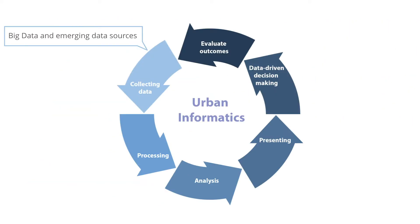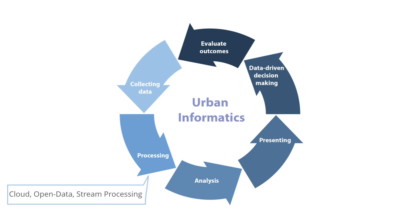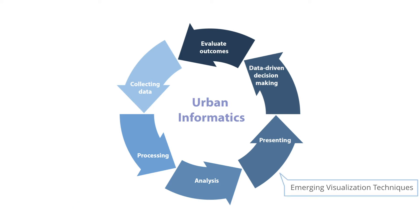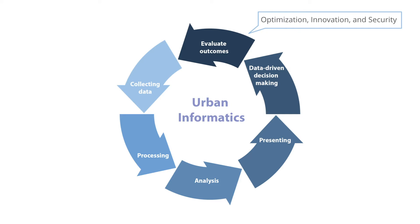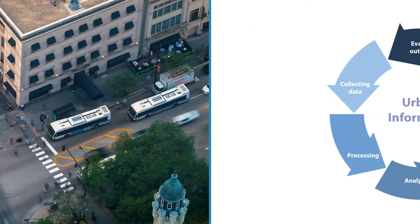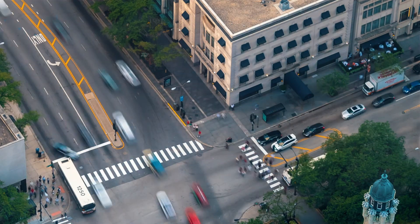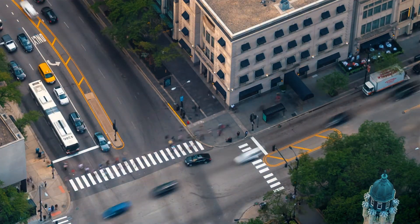This course is organized around the steps of urban informatics. These six steps — collecting data, processing, analysis, presenting, data-driven decision making, and evaluating outcomes — are common steps in any planning process. But in recent years, technological advancement in digital technology and ICT in particular has shaped a new field of urban informatics, which relies on these emerging technologies and concepts.